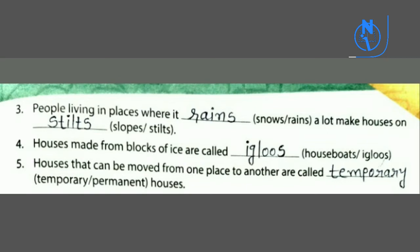Fourth blank: houses made from blocks of ice are called — house boat या igloo? तो answer will be igloos. Fifth blank: houses that can be moved from one place to another are called temporary or permanent houses? Means ऐसे house जिसको हम एक place से दूसरे place में move कर सकते हैं — so answer will be temporary.